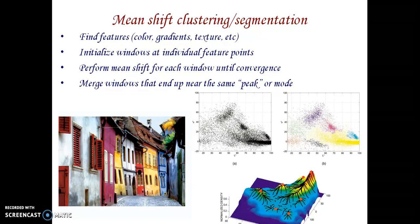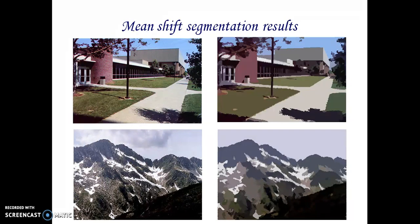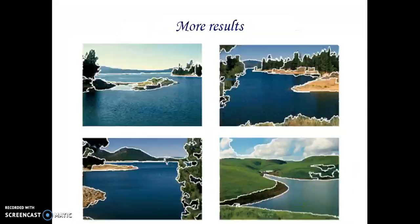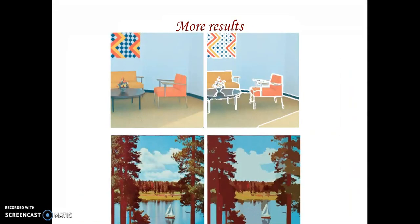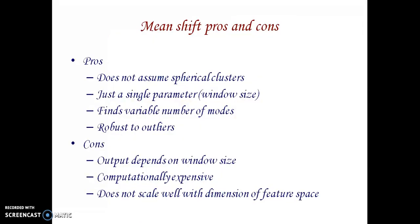Here are some examples of the mean shift segmentation algorithm. The first image is the original image and the second image shows the mean shift segmentation result. The advantages are that it is very robust to outliers, finds variable cluster shapes, and requires just a single parameter. The disadvantage is that it is computationally very expensive and output depends on the window size.